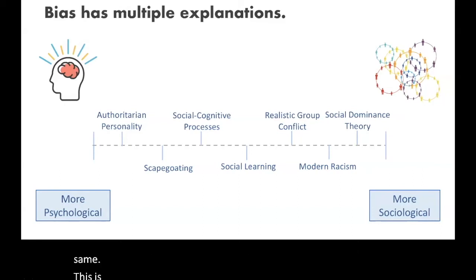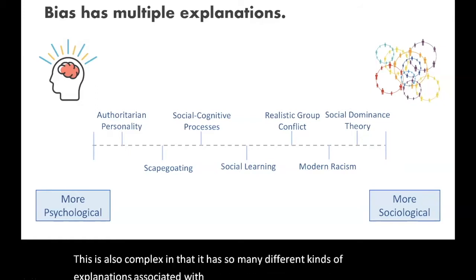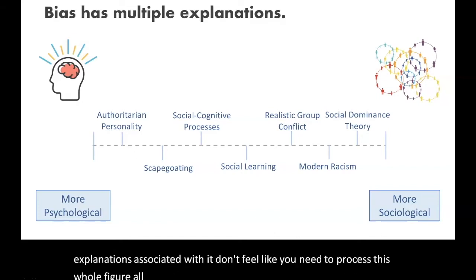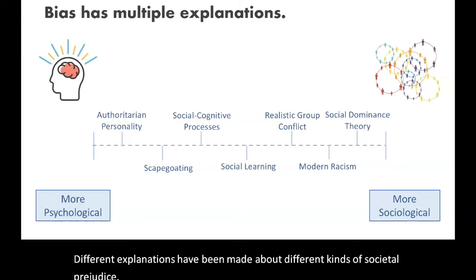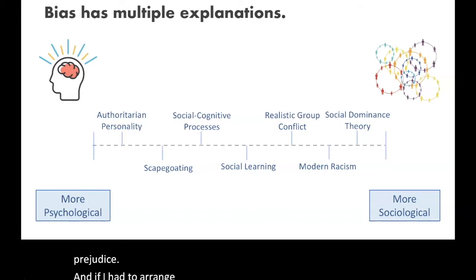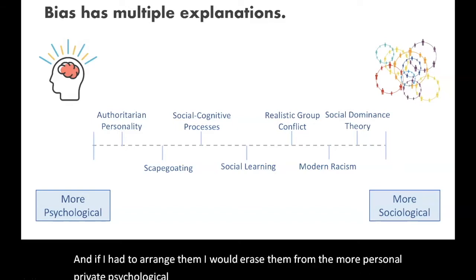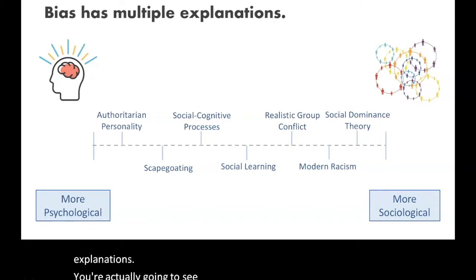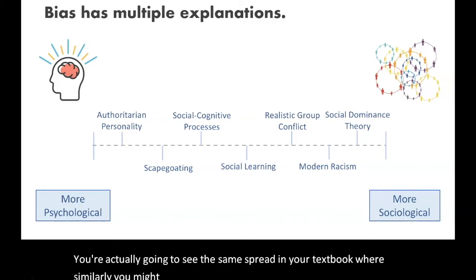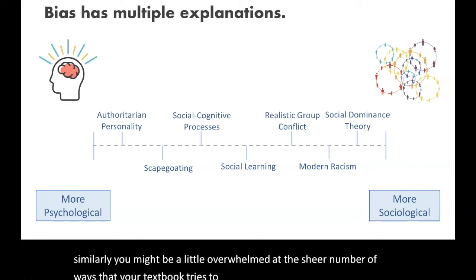Bias is also complex in that it has so many different kinds of explanations associated with it. I just want to give you a sense of the range of different explanations that have been made about different kinds of societal prejudice. If I had to arrange them, I would array them from the more personal, private, psychological explanations to the more sociological explanations. You're going to see the same spread in your textbook, where similarly you might be a little overwhelmed at the sheer number of ways that your textbook tries to explain racism and sexism and so on.